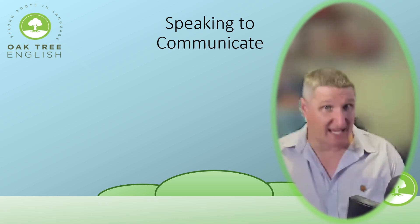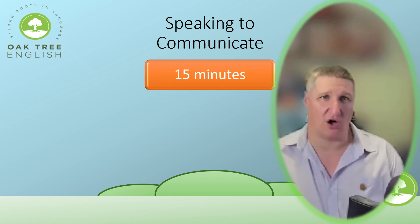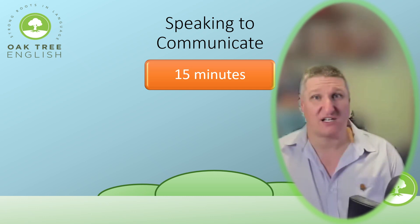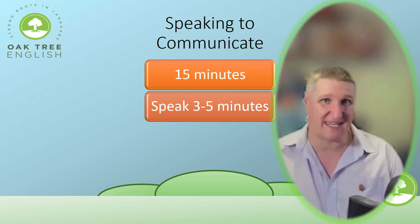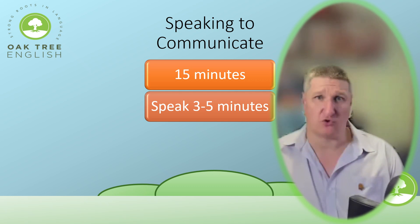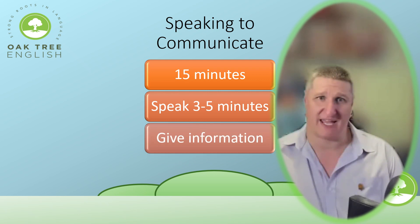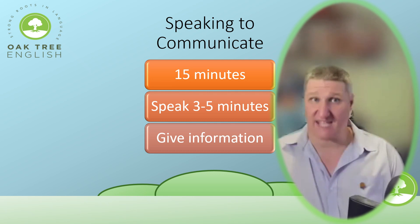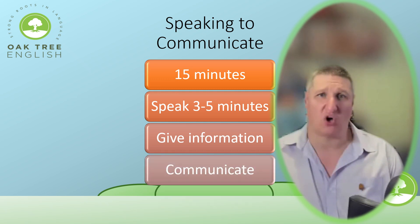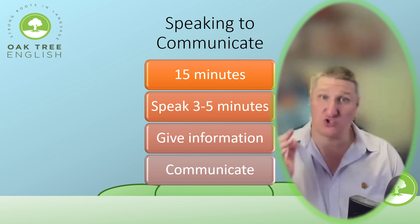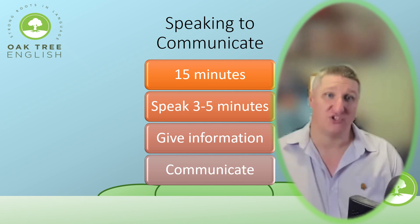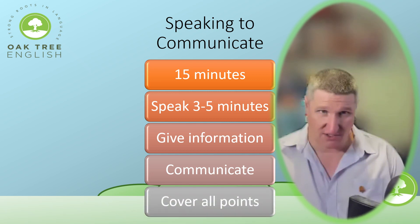The first speaking activity is 15 minutes long in theory, but this includes about 5 minutes of speaking and 10 minutes of planning. The task is in two parts. First, you will be asked to give some personal details, such as your name and address, including the postcode, and spell your name. The second part will be to talk about a topic that you have been given. The exam will suggest some things you should talk about, so make sure you speak about everything you are asked for.